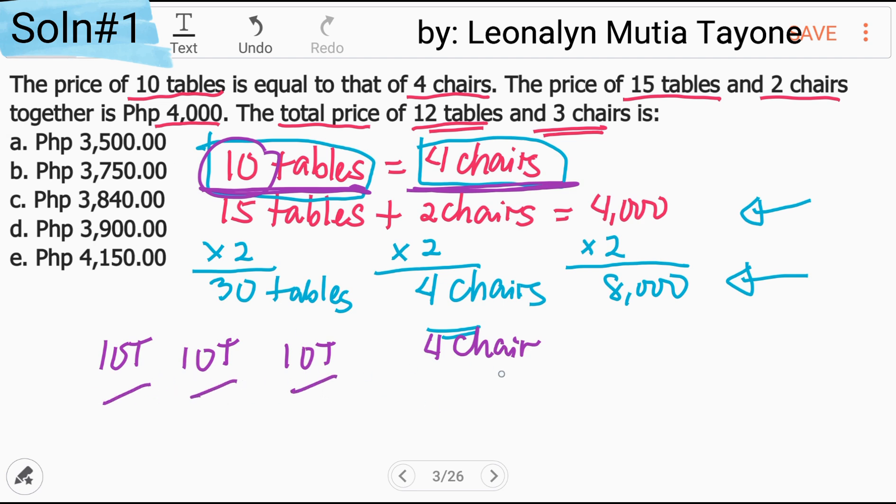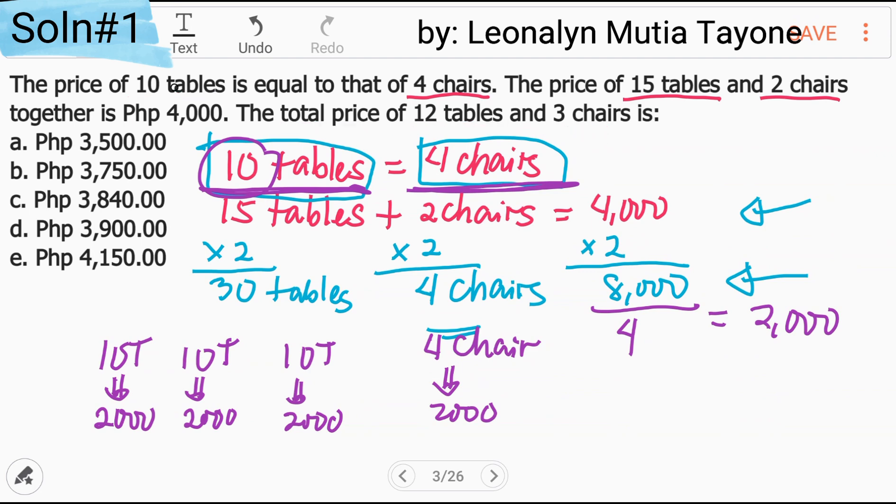Therefore, 4 ito. Yang 4 na yan, hatiin natin ang 4 itong 8,000. 8,000 divided by 4 and that is 2,000. Ibig sabihin kada isa nito ay ang price ay tag-2,000. Isang grupo na to, tag-2,000 yan. Ngayon, balikan natin yung tanong. Ang tanong dito ay 12 tables at yung 3 chairs, yung total price niyan. Tune muna tayo sa chairs. Kung 4 na chairs, ang equal dyan or ang value niyan ay 2,000.